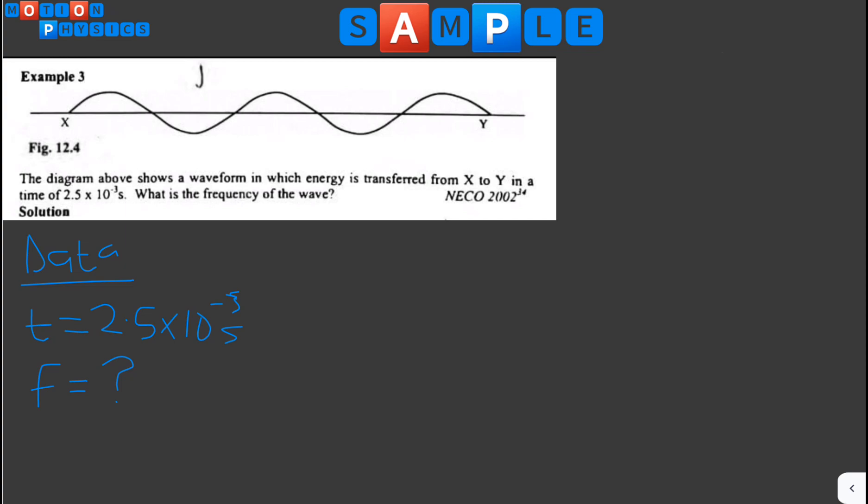Now, whenever you are asked to calculate frequency and you are given time, you need to find the wavelength. From the waveform diagram, we can determine the wavelength. How do you count wavelength? This up loop and this down loop together means one wavelength.